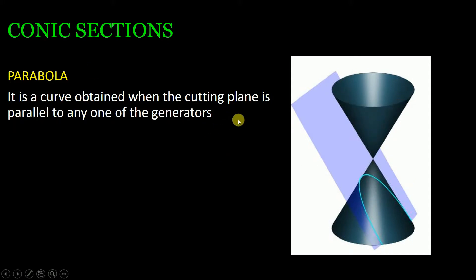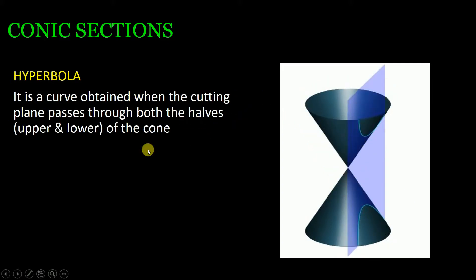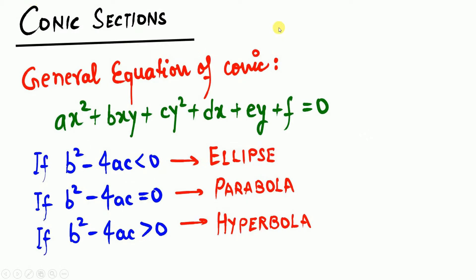How will you get a hyperbola? A hyperbola is a curve obtained when the cutting plane passes through both halves — the upper and lower half — of the cone. As you can see, the cutting plane is kept vertical, cutting both the upper half and lower half of the cone. The curve shown in sky blue color is called a hyperbola.